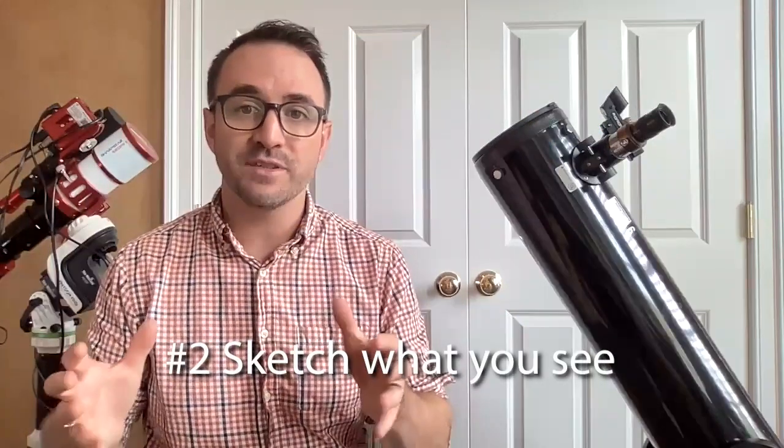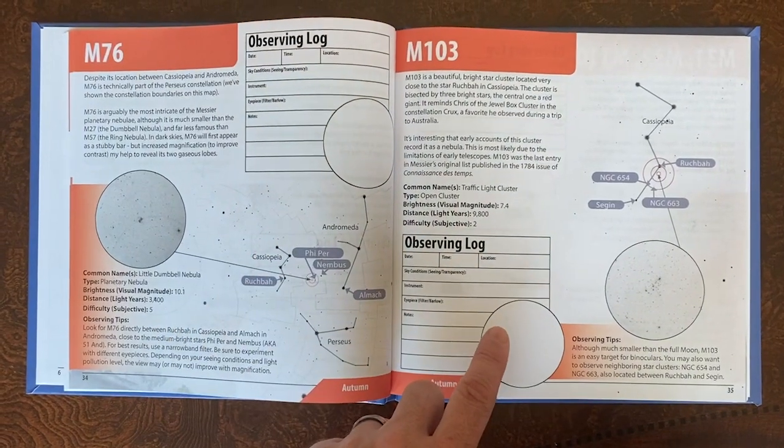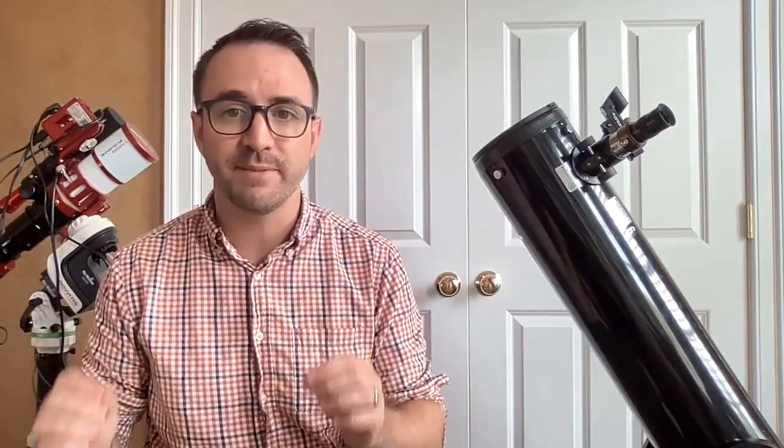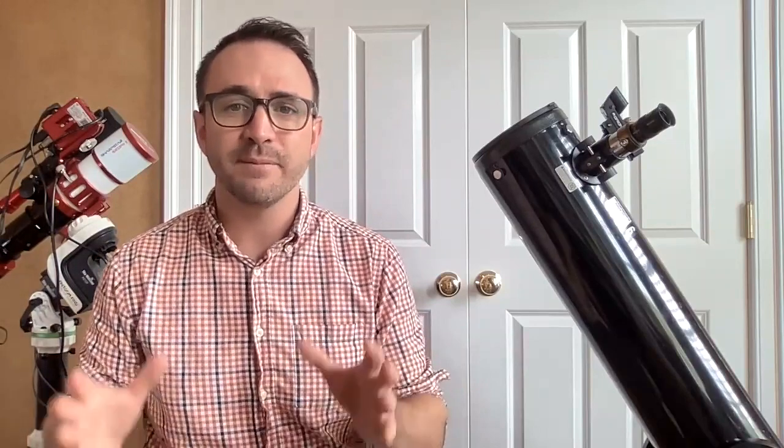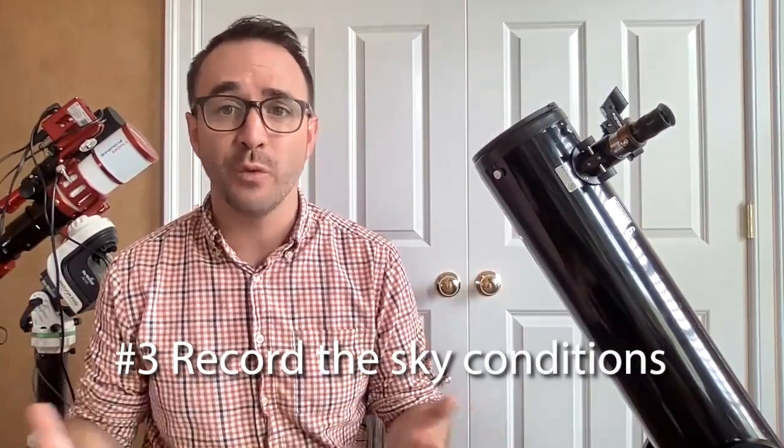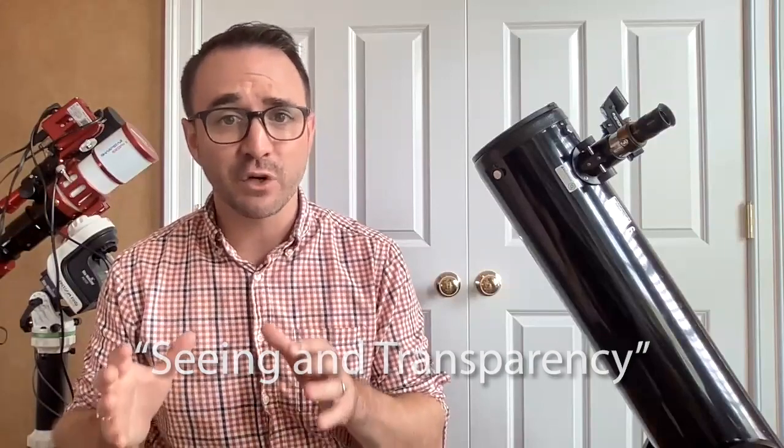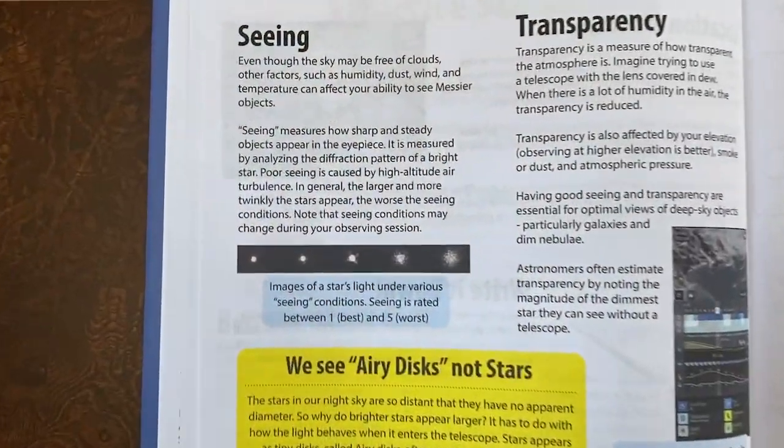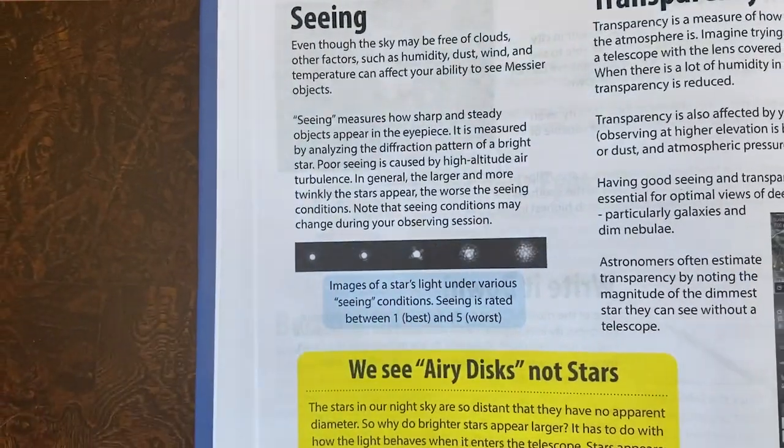We also recommend you sketch what you see. That's why on every page of this book, there are sketching circles. Your eye works very different from a camera. When you sketch, you're capturing the nuances that are unique to the human experience. You're also documenting your progress, something you'll look back on years from now as a reminder of how far you've come. You'll also want to record the sky conditions. This means you'll need to record an estimate of the seeing and transparency. Note that observing programs often require this. I typically use the app Astrospheric to check the seeing and transparency before I begin observing, but there are detailed instructions for determining these metrics for yourself on page 14 of our book. Basically, you rate seeing from one to five based on this chart, and transparency can be described by the magnitude of the dimmest star you can see without a telescope.